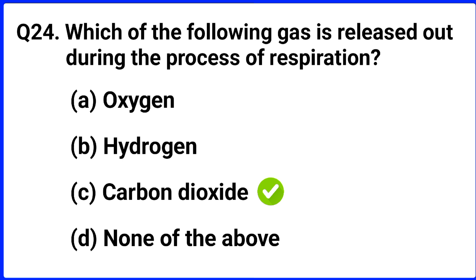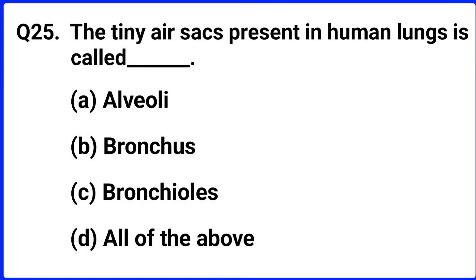Question number twenty-five. The tiny hair-like structures present in human lungs are called? The right answer is option A: cilia.